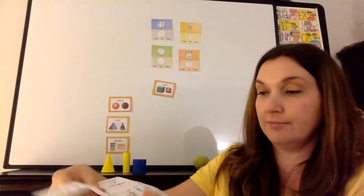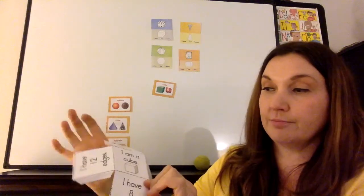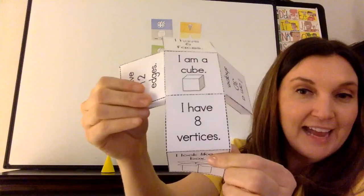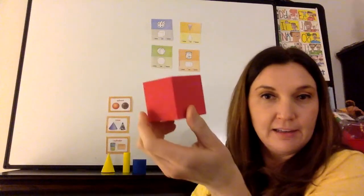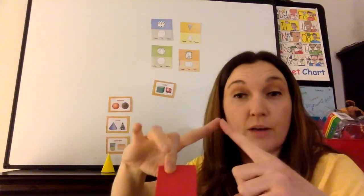All right, and then it says, I have eight vertices. So when you're talking about a cube, I'm going to take the one that's already together for me. Then we know vertices are where the two sides meet. One would be called a vertex or the vertex.